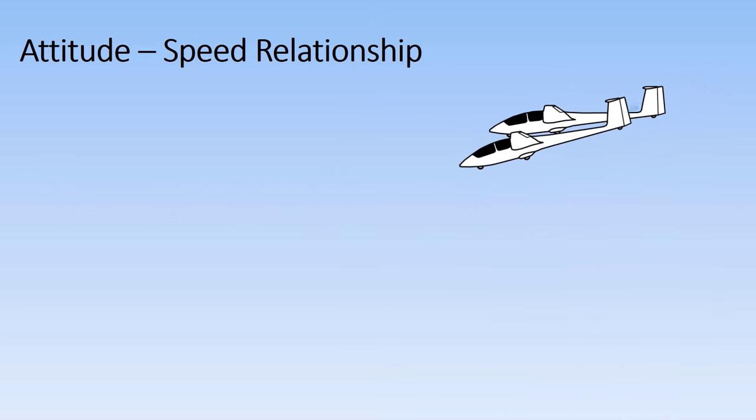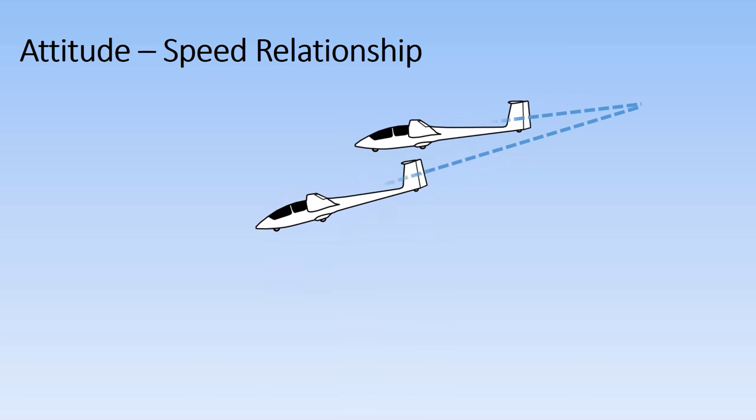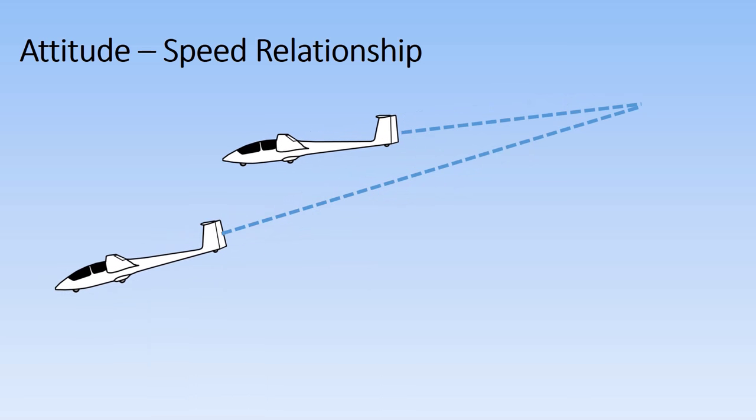There is a relationship between the attitude and the air speed of the glider. The more nose down the glider is, the faster it will fly. However, it will also descend faster.